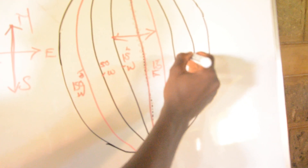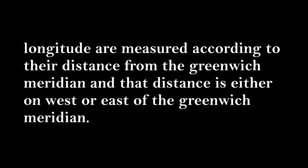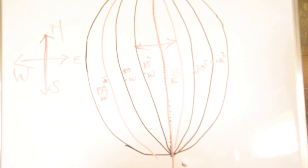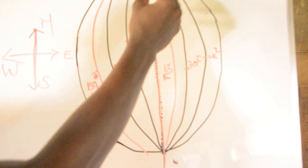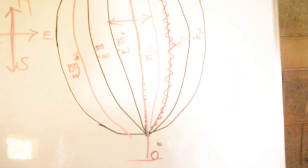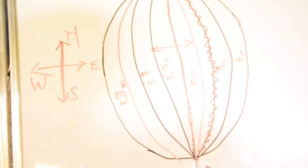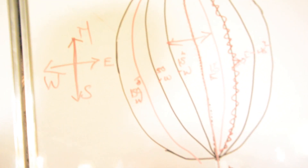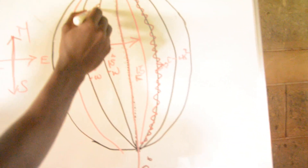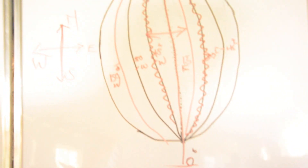This one is 30 degrees east and this one is 45 degrees east. So longitudes are measured according to their distance from the Greenwich Meridian, and that distance is either west or east. When you're told that a point is 30 degrees east, that means that point is located on the 30 degrees east longitude. When you have a point that is 15 degrees to the west, just know that point is located on that longitude. And that's where we're done with longitude and latitude individually.